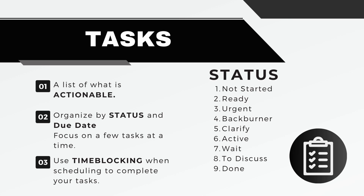A status tells you what's going on with a task. Some important statuses are 'ready' and 'active.' The ready list is all the things you could work on. The active list is the specific things you're focusing on today — maybe three things. A ready task does not move to active until the active task is done, complete, or waiting on something else.